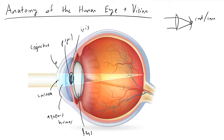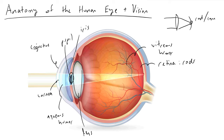As we pass through the lens, the light rays are going to begin to converge. Then what's going to happen next is we're going to pass through something called the vitreous humor. As we pass through the vitreous humor, we will finally reach the retina. The retina is going to have a very high concentration of rods and cones, which are the actual cell types responsible for transducing — translating — the electromagnetic signal, the photon, into an electrical or chemical signal that can be perceived by other neurons in your brain.